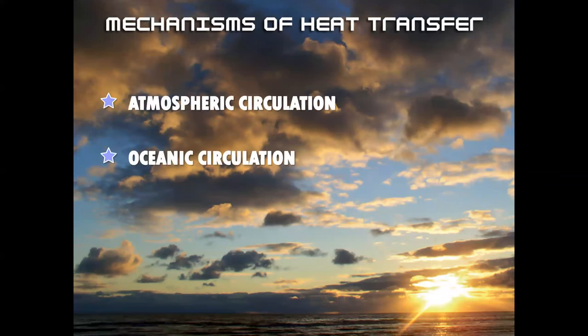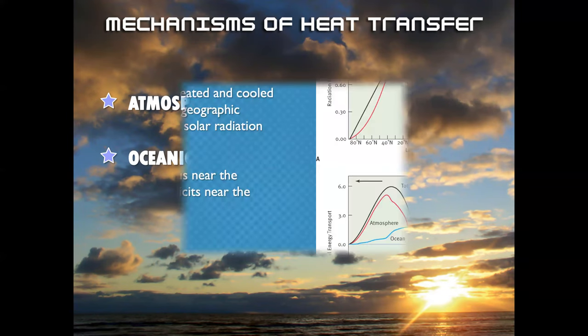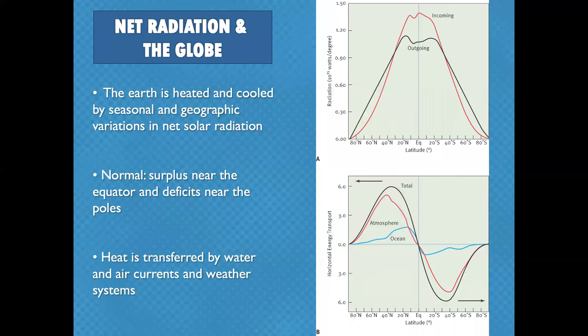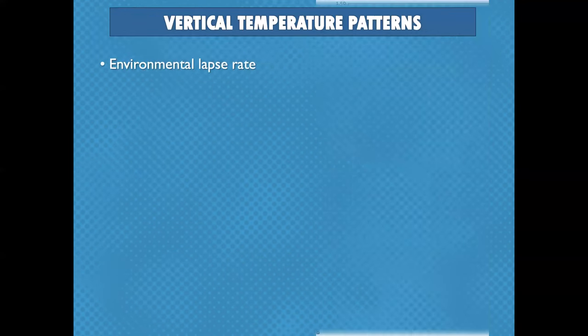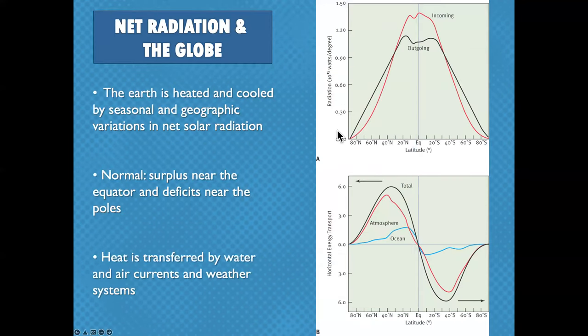Mechanisms of heat transfer include the ocean and the atmosphere — in the atmosphere we're talking about storms, hurricanes, winter nor'easters, and thunderstorms. Oceanic circulations mean ocean currents. At the equator there's more energy coming in than leaving; toward higher latitudes the opposite happens.